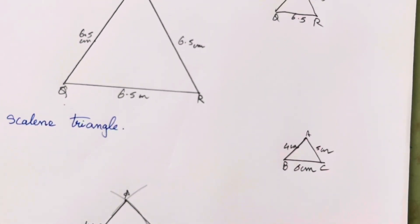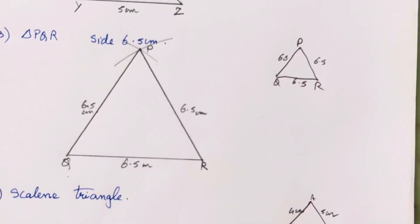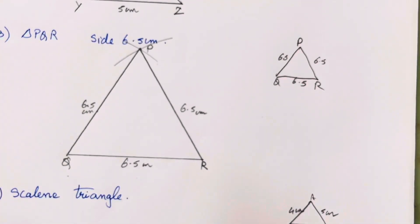If you are finding anything difficult, let me know in the comment section. Remember, in question number 4, you have to draw equilateral, isosceles, and scalene triangles with your own measurements — you can take any measurements of your choice. See you in the next video. Till then, take care, and don't forget to comment whether you liked the video.